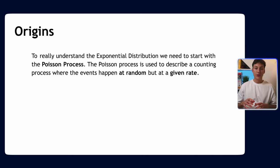To really understand the idea of waiting times and where this comes from, we need to start understanding the Poisson process. The Poisson process is linked to the Poisson distribution, which I discussed in my previous video. A Poisson process is used to describe a counting process where events happen at random but at a given rate.